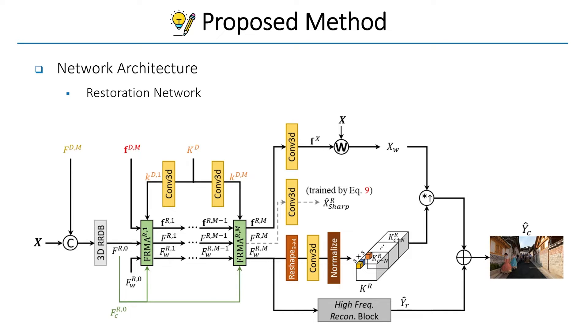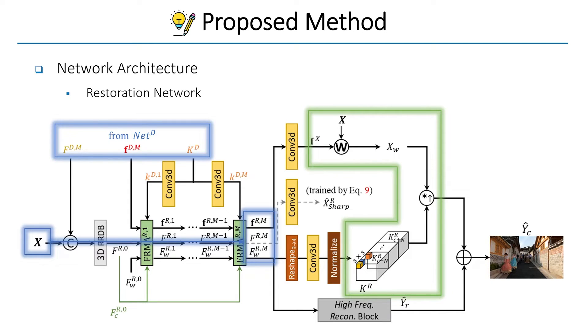The restoration network takes a blurry low-resolution sequence and three features predicted by the degradation learning network as input. Then, it predicts optical flow in the blurry low-resolution sequence and restoration kernels for joint video super-resolution and de-blurring through stacked FRMA blocks. Employing the predicted flow and restoration kernels, the network utilizes flow-guided dynamic filtering to predict low-frequency information of sharp HR frames and combines it with predicted high-frequency detail to output the final result.